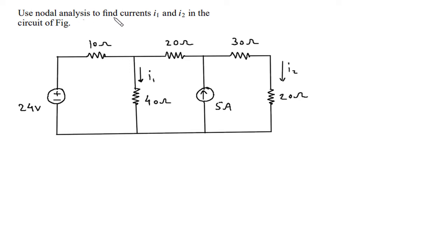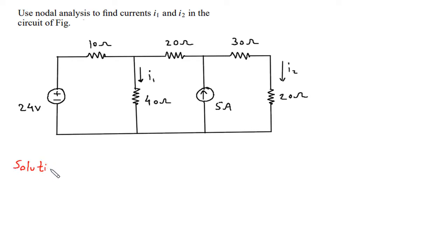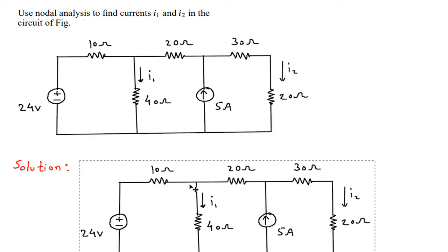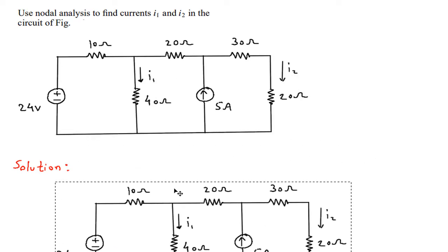Use nodal analysis to find currents I1 and I2 in the circuit. We have to find I1 and I2 in this circuit. Solution: first we will redraw the circuit.